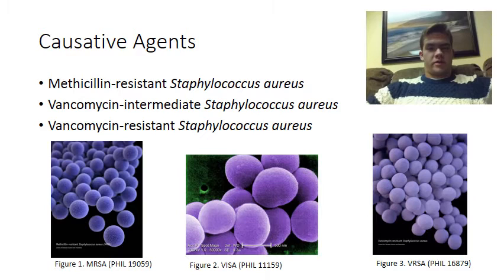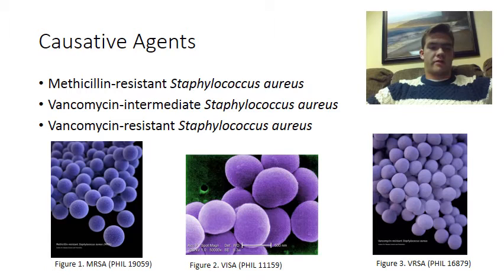MRSA, VISA, and VRSA is quite a mouthful, so what does it actually stand for? Well, it's actually pretty simple. They're all just strains of Staphylococcus aureus that are resistant either intermediately or totally to various antibiotics. For instance, MRSA stands for methicillin-resistant Staphylococcus aureus, so it's resistant to methicillin, but it's also resistant to a whole host of other antibiotics, including fluoroquinolones, erythromycin, oxacillin, and tetracycline.